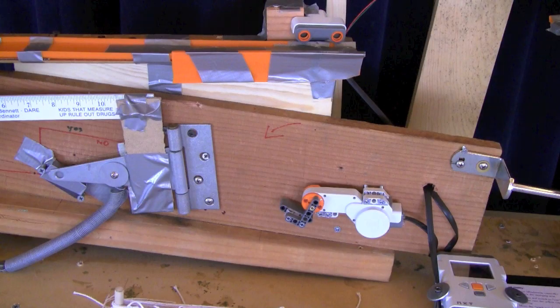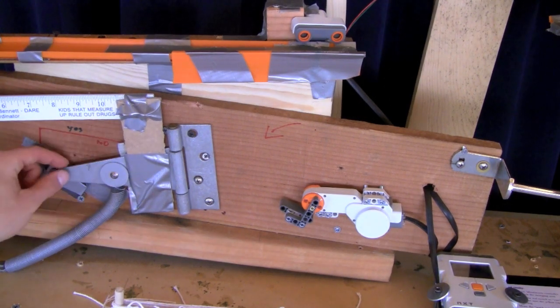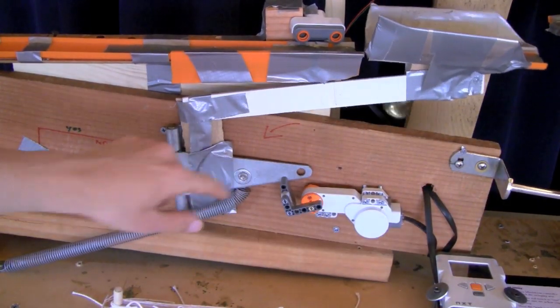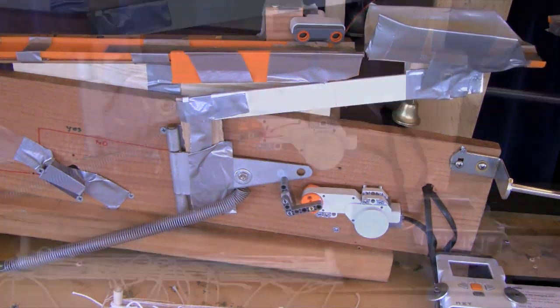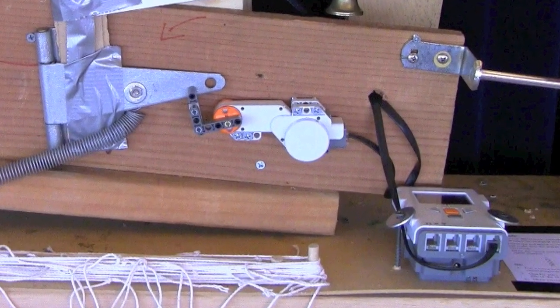Next, this movable ramp section is pushed to the right-hand position against the will of the spring. A small LEGO Mindstorms motor locks it in place.